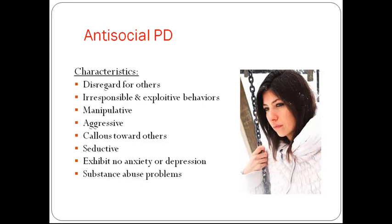Anti-social personality disorder: there's a failure to conform to social norms and laws. They tend to act out their conflicts and ignore normal rules of social behavior. They can be deceitful, impulsive, or have a failure to plan ahead, and irresponsible. They may have physical fights or assaults. Individuals often show no remorse for hurting others and have an absence of anxiety or guilt. They may neglect responsibilities, tell lies, and perform destructive or illegal acts without developing insight into consequences. The risk for alcohol and substance abuse is quite high.